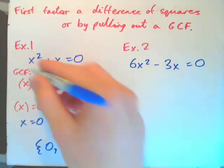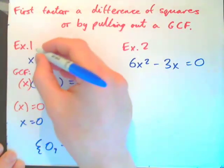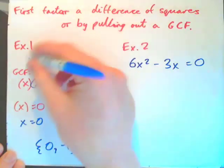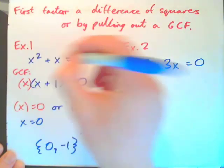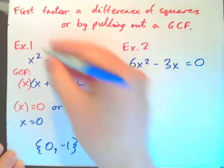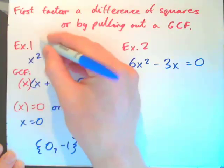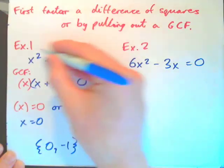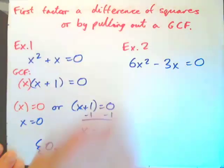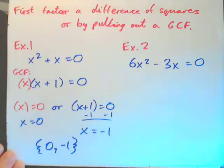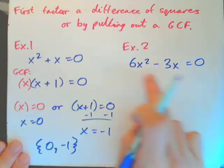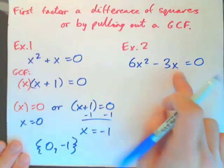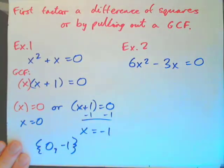If you check it, you'll see that it works. If I plug 0 into x, the whole thing becomes 0. If I plug negative 1 in, this becomes positive 1, and this becomes negative 1 — 1 minus 1 is 0. Now press pause and solve this one: 6x squared minus 3x equals 0.